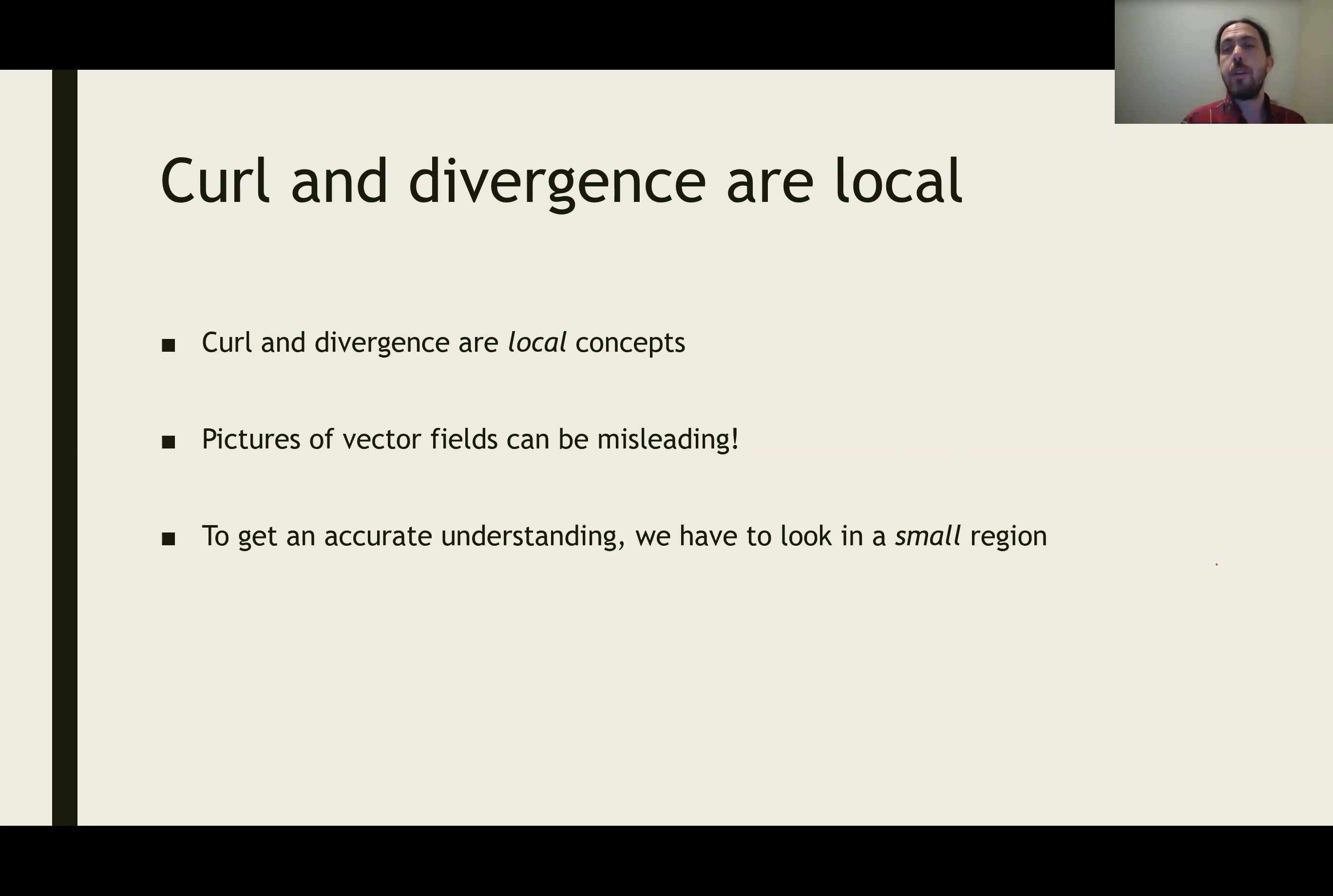And so the picture of the vector field might be misleading. The picture might make it look like the vector field is expanding, but in fact it's not. It's contracting instead. And so to get a more accurate idea of what curl and divergence are expressing, we have to look in a small region.